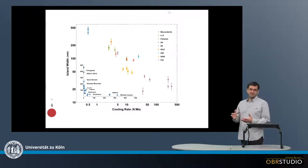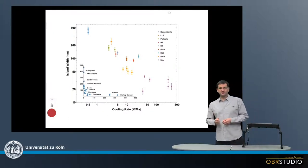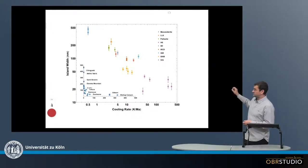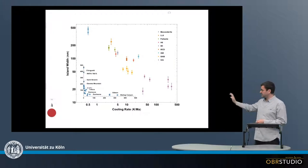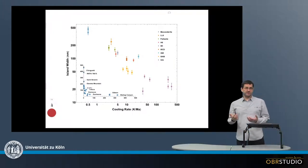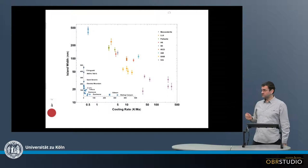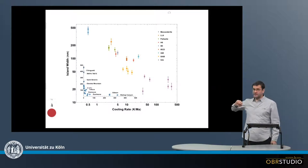There are various methods to determine the cooling rate of iron meteorites, and one of these is shown here in this plot. Here on the x-axis there is the cooling rate in Kelvin per millions of years, and on the y-axis is something that is called island width.